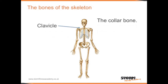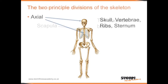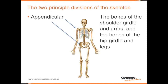The clavicle, also known as the collarbone. The scapula, also known as the shoulder blade. The skeleton can be divided up into 2 principal divisions. Firstly, the axial skeleton — this is the skull, the vertebrae, the ribs, and the sternum. The appendicular skeleton is made up of the bones of the shoulder girdle and the arms, and the bones of the hip girdle and the legs.